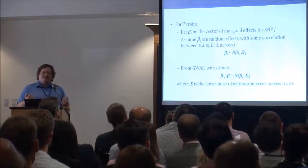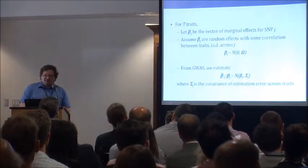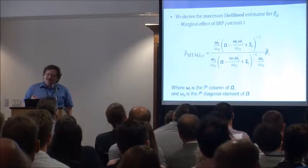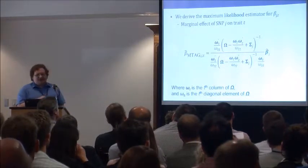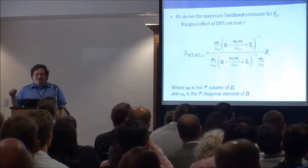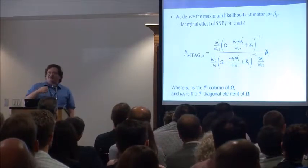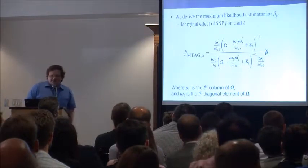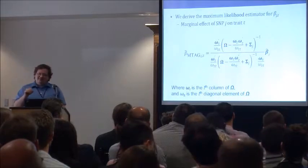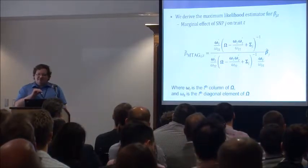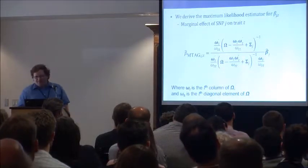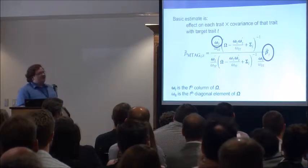There could be sample overlap, and thus correlated estimation error across the samples. Given this model for the effects, we can derive the maximum likelihood estimator of the marginal effect for a given SNP — beta sub J sub T for a specific trait. We can also get there without maximum likelihood assumptions using method of moments and arrive at the same estimator, but we'll discuss it in terms of maximum likelihood because that's simpler. The math is in terms of the vector of estimated effects beta sub J, the omega matrix, and the sigma matrix, with extraction of elements out of omega into these lowercase omega vectors.